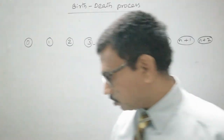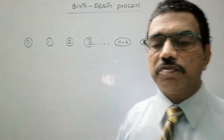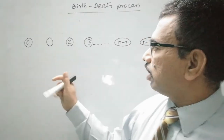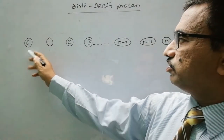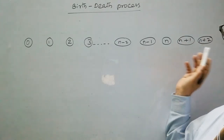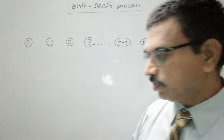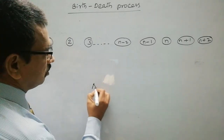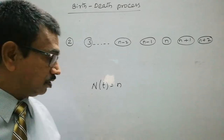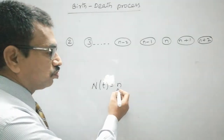In order to explain the complete process and to derive the balance equation, let us have a look at the states: 0, 1, 2, 3, and so on, n-2, n-1, n, n+1, and n+2. These are the different states. That means at any time t, N(t) = n, which means the number of customers in the queuing system at time t equals n.